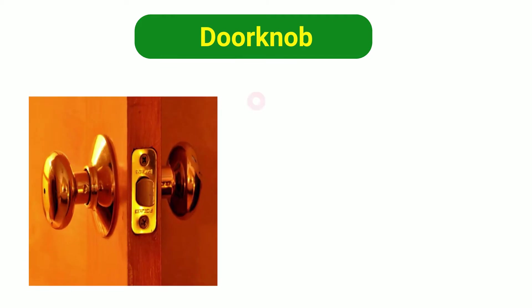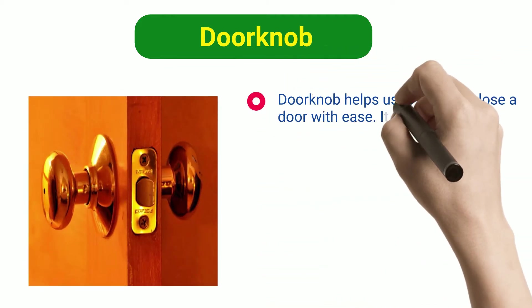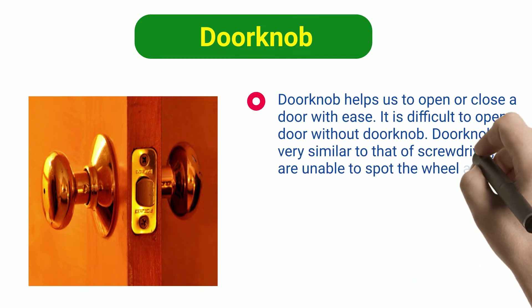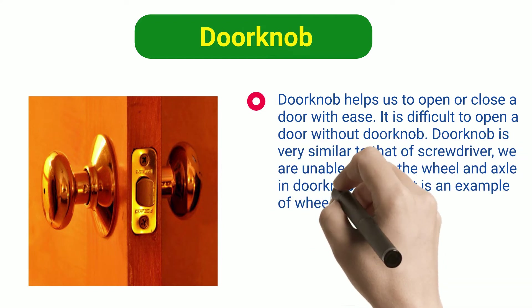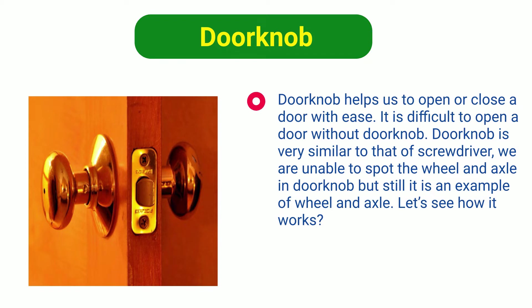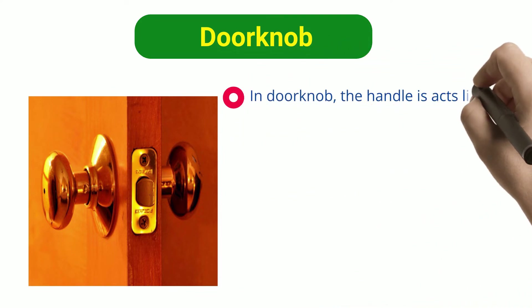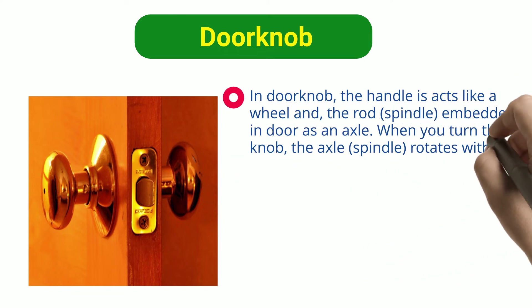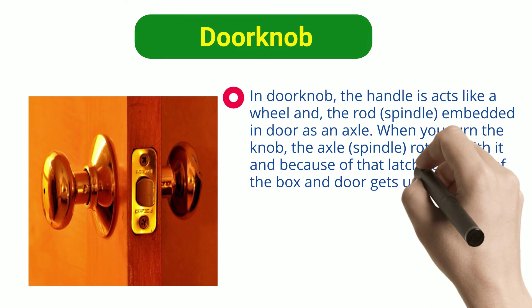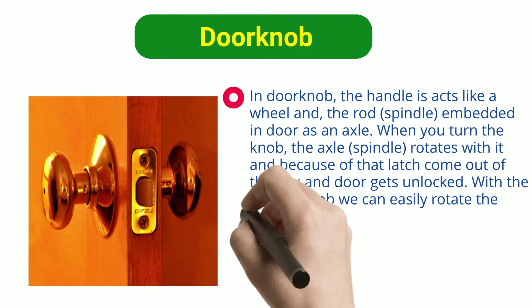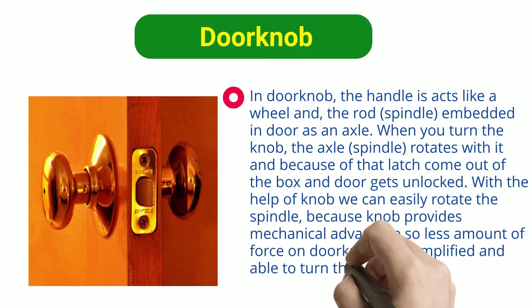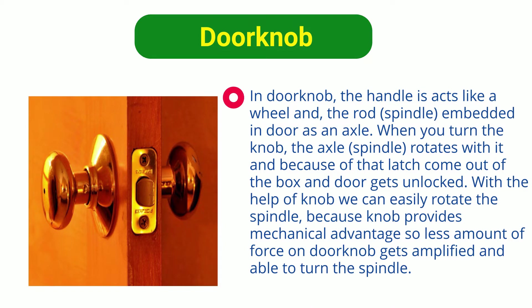Doorknob. A Doorknob helps us to open or close a door with ease. It is difficult to open a door without a doorknob. A Doorknob is very similar to a screwdriver — we are unable to spot the wheel and axle in a doorknob, but still it is an example of wheel and axle. In a doorknob, the handle acts like a wheel, and the rod or spindle embedded in the door is the axle. When you turn the knob, the axle (spindle) rotates with it, and because of that the latch comes out of the box and the door gets unlocked. With the help of the knob we can easily rotate the spindle, because the knob provides mechanical advantage, so less force on the doorknob gets amplified and is able to turn the spindle.